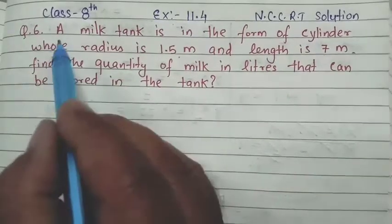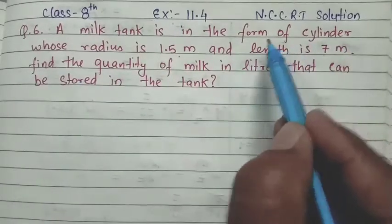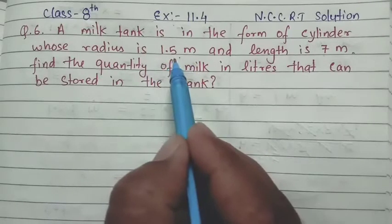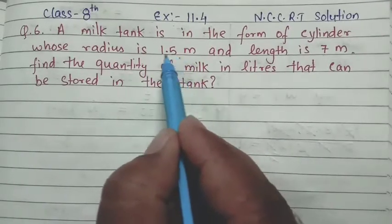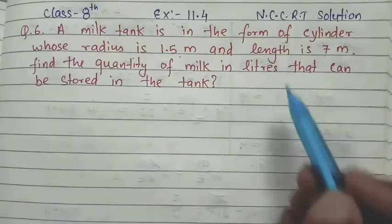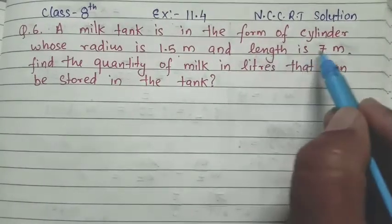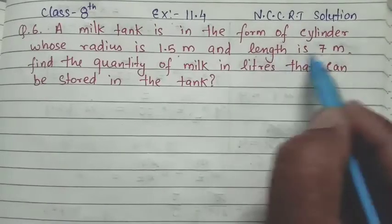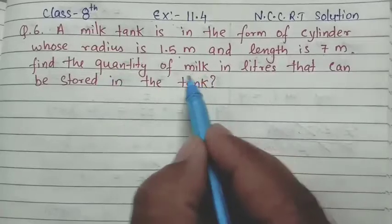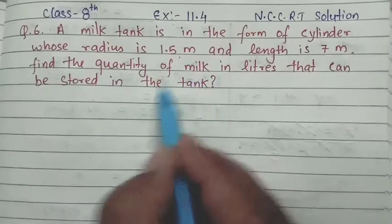So the question says a milk tank is in the form of a cylinder. The radius of the circular base is 1.5 meter and the length — which is the height of the cylinder — is 7 meter. We need to find how much milk can be stored in the form of this cylinder.